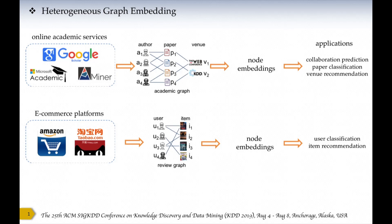Similarly, online e-commerce platforms like Amazon and Taobao can be seen as heterogeneous graphs with user-item nodes and rating-review relationships. We can employ the learned node embeddings to solve item recommendation and user classification problems.